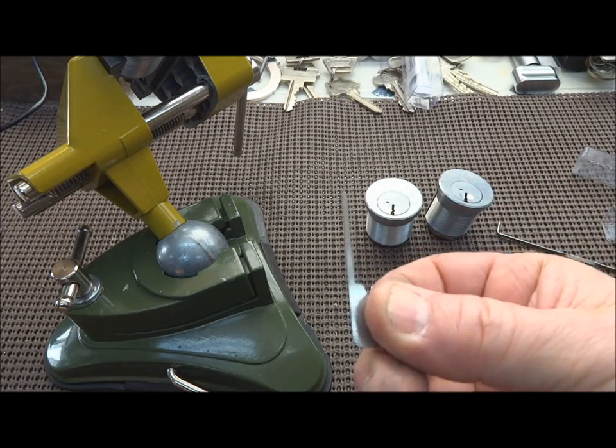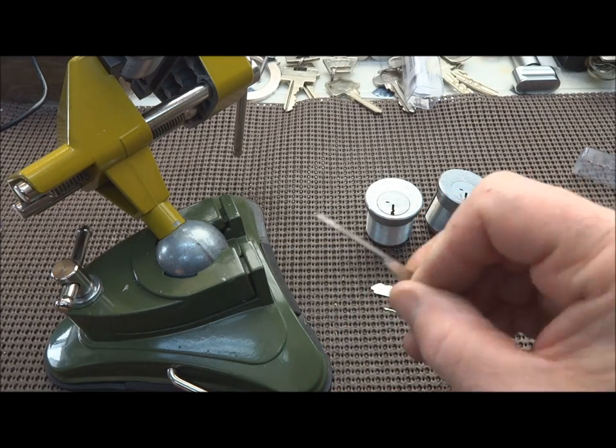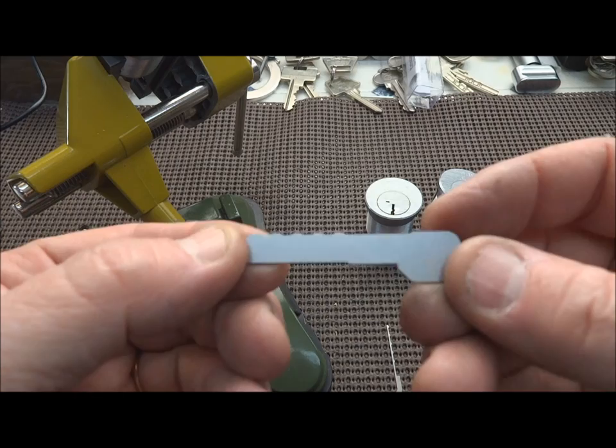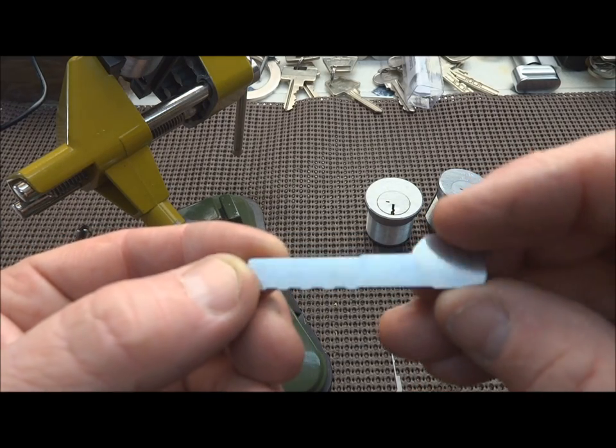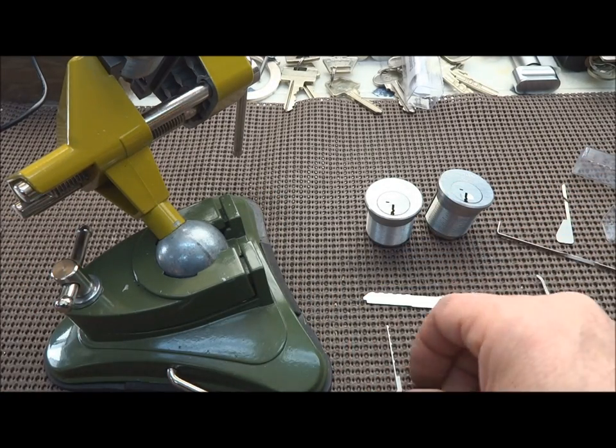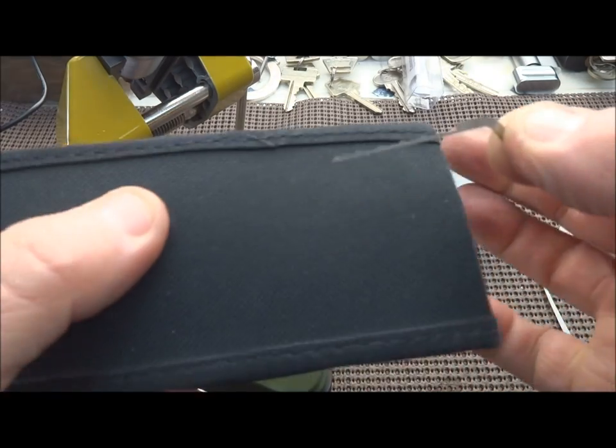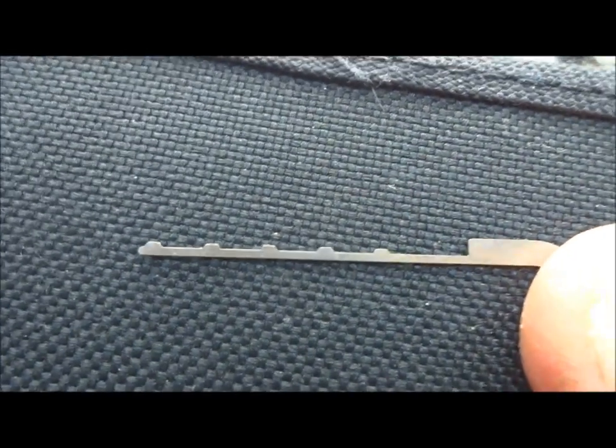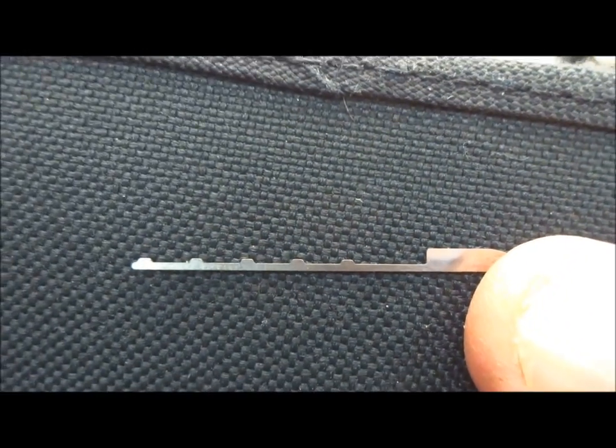This is a normal change tool. Those are pretty readily available. This is just a change key that comes usually with the U-change for people servicing the locks. Nothing spectacular about that. What is spectacular is this little tool here. This is Peterson's bypass tool. See the little knobs on there?